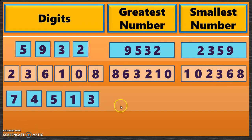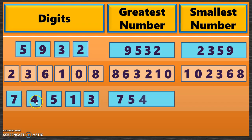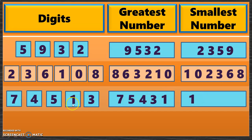Next, with 5 given digits, to find the greatest 5-digit number arrange from big to small: 7, 5, 4, 3, 1 — giving 75,431. To find the smallest 5-digit number, arrange from small to big: 1, 3, 4, 5, 7 — giving 13,457.